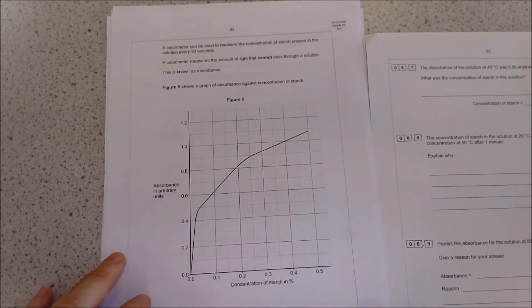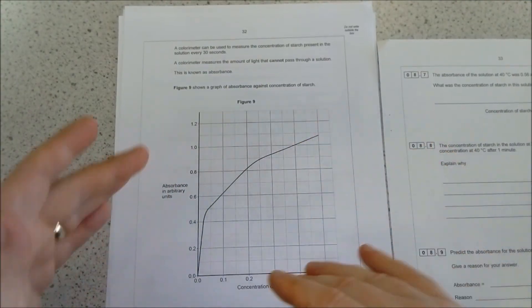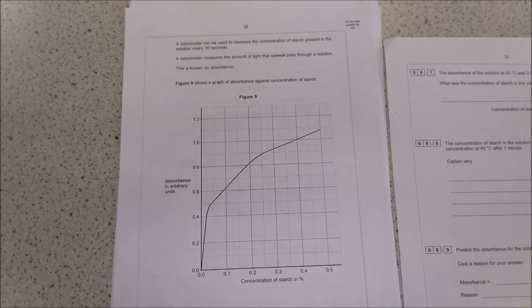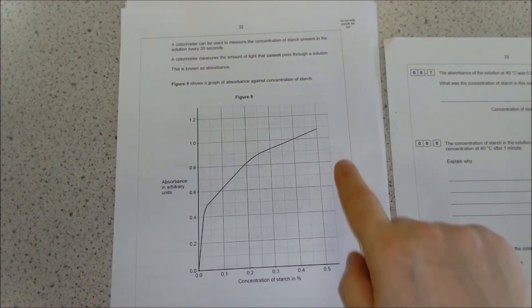We move on. There's a graph. If there's a graph, then take note of what the axes are labeled, take note of the shape of the graph.